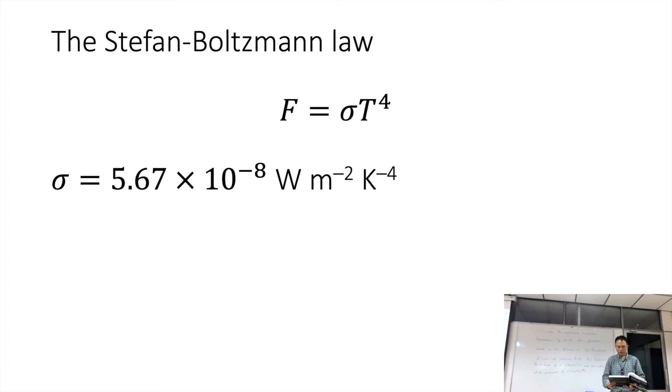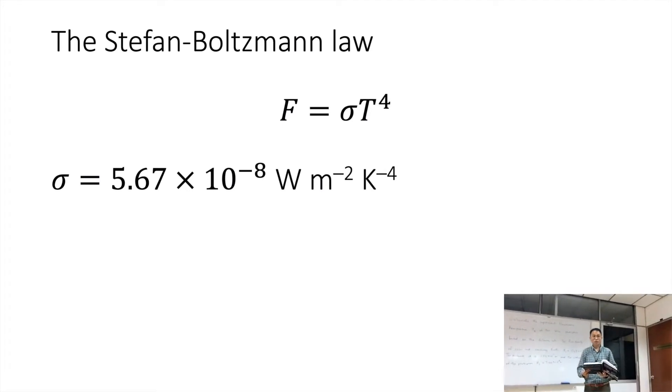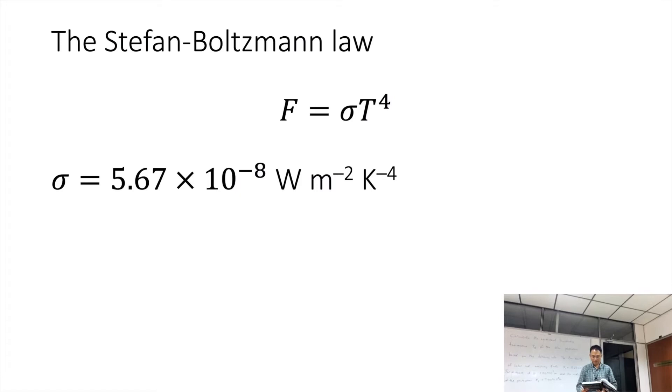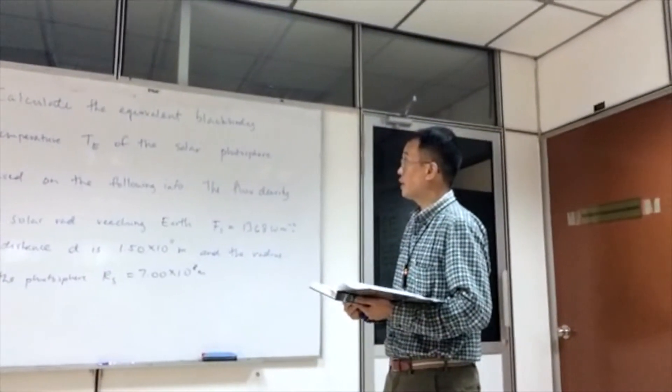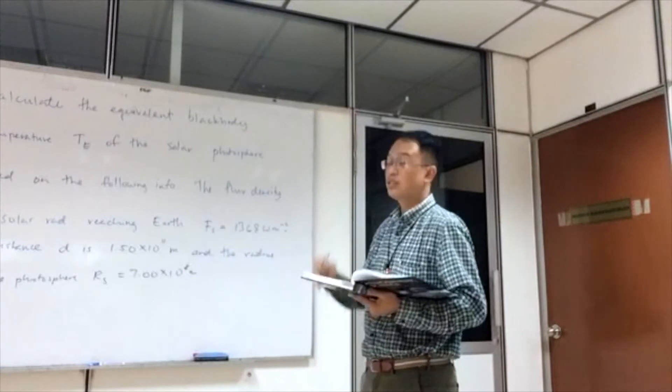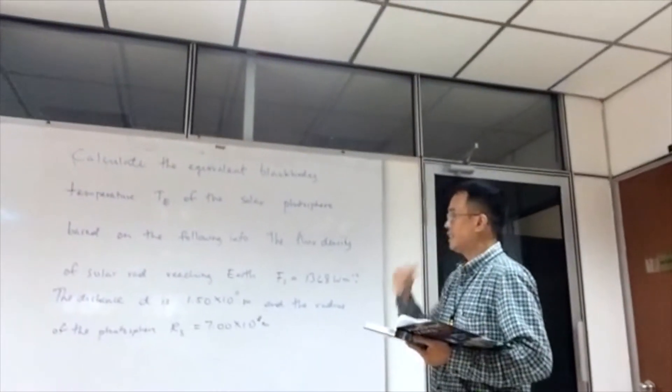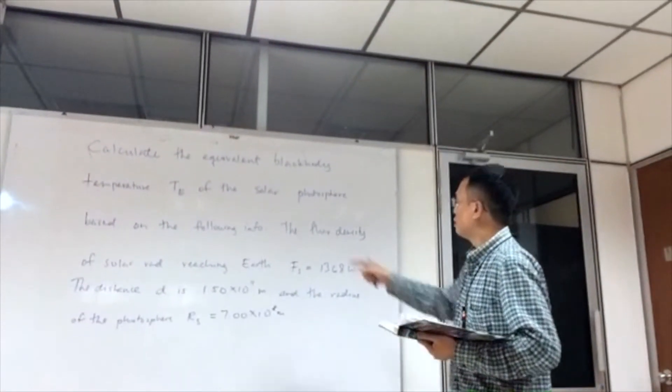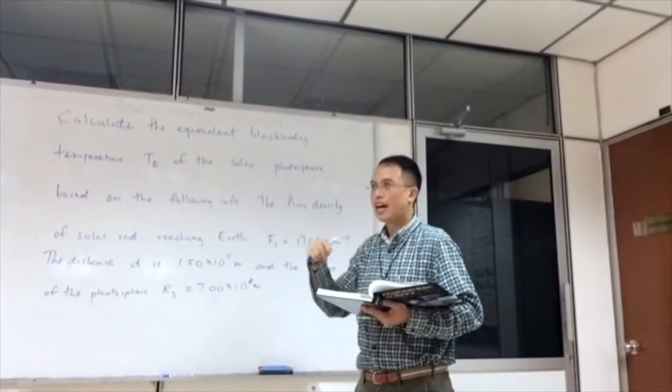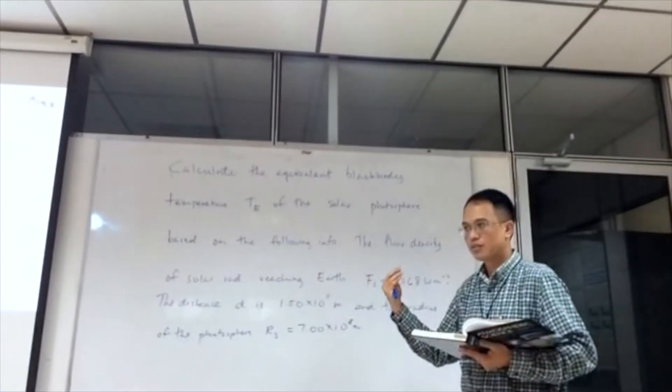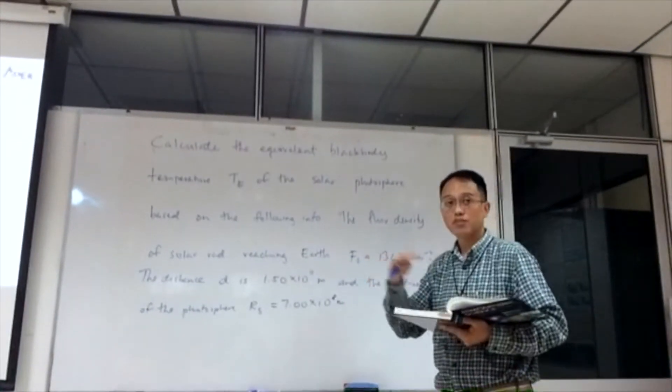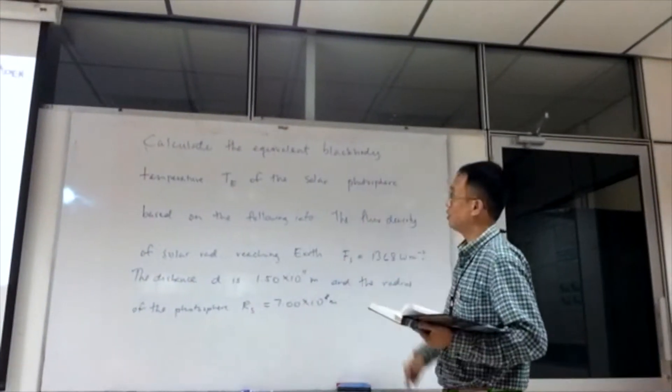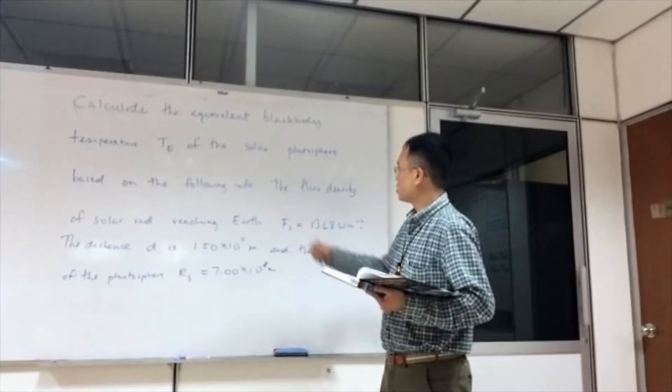So this is another example from the book, an excuse for us to use the Stefan-Boltzmann law. Here the question states that we need to calculate the equivalent blackbody temperature Te of the solar photosphere, that means the outermost region of the sun that we can see, the visible part or surface of the sun, based on the following information.